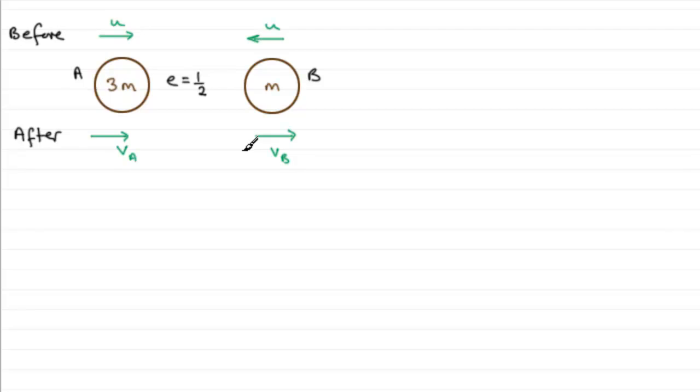To do this, we need to do an equation for the conservation of linear momentum and then look at another equation, Newton's law of impact. We'll equate the two equations and solve them simultaneously for VA and VB. You might like to pause the video and have a go at this from here on.